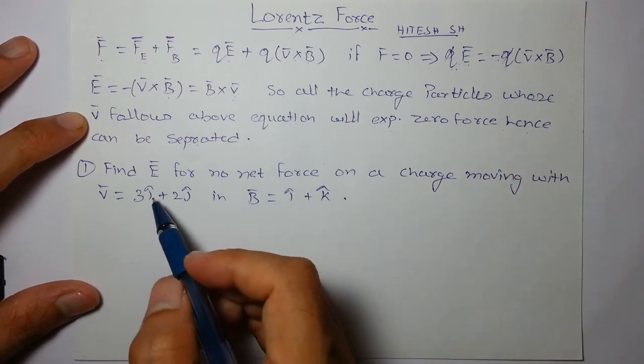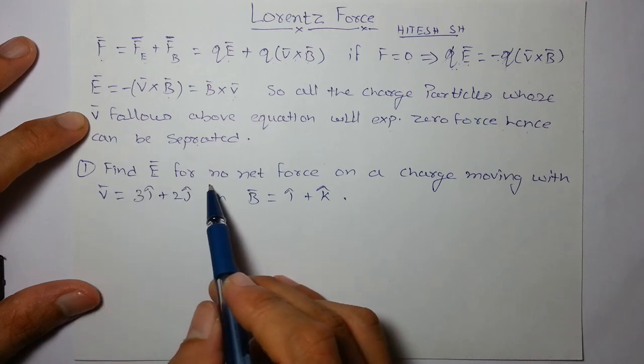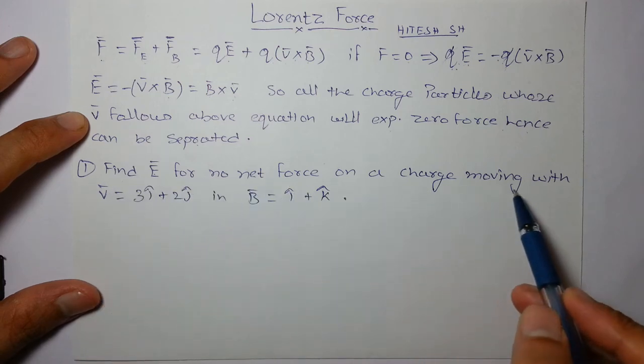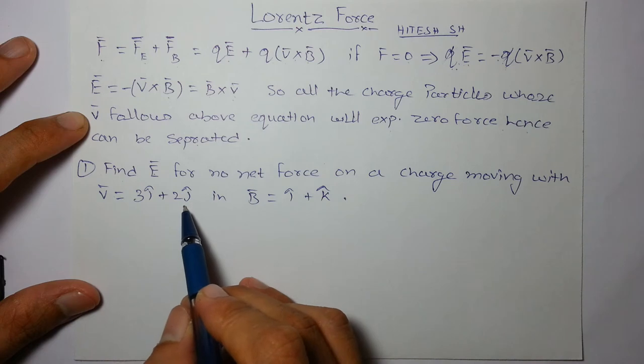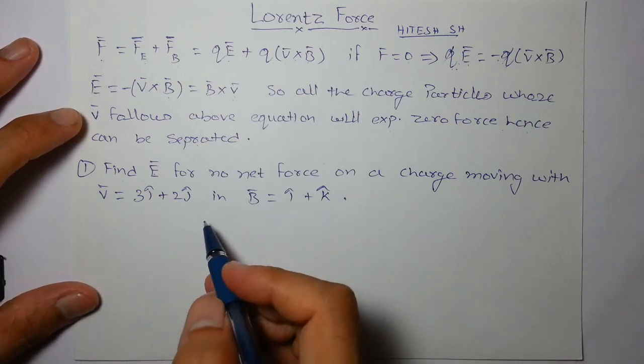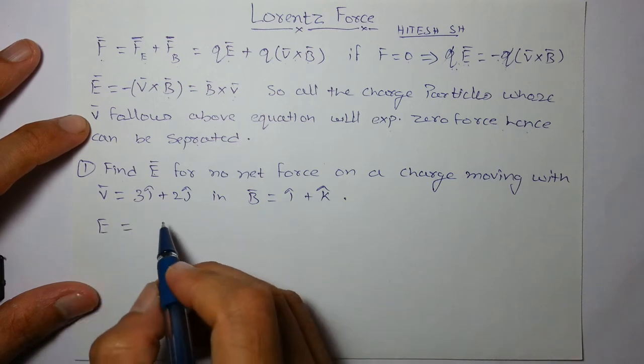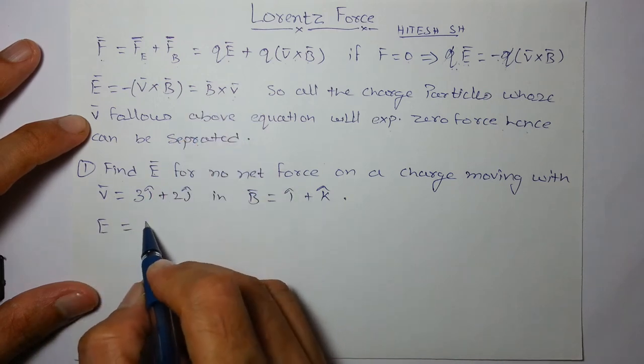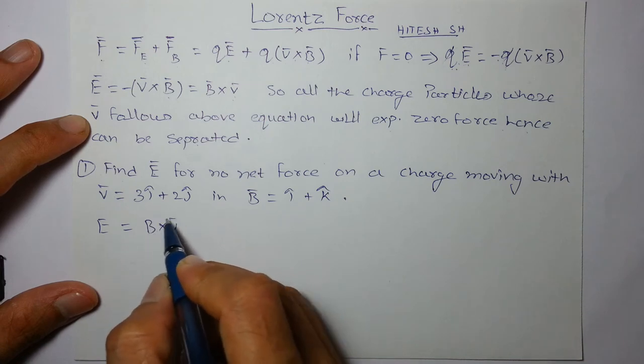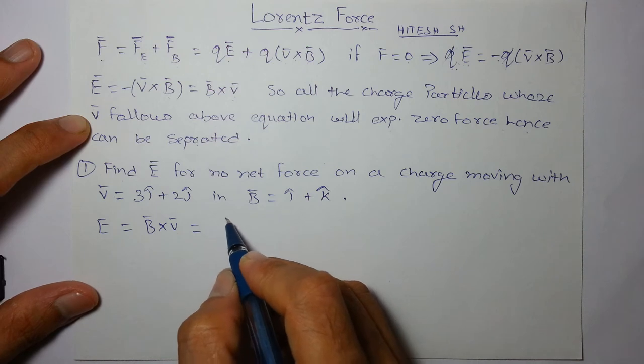Okay, so let's talk about the question. Find E for no net force on a charge moving with velocity, this, in uniform field, this. Obviously, now you have to find E. E is nothing but B cross V. Take the cross product and you will get the answer.